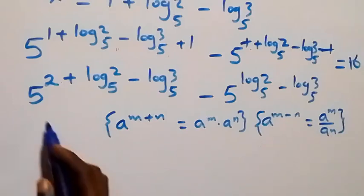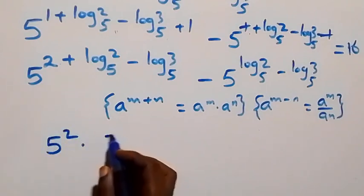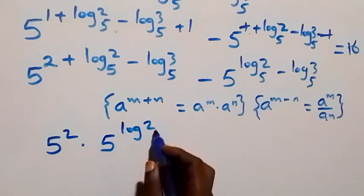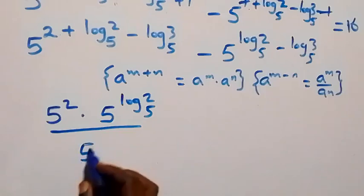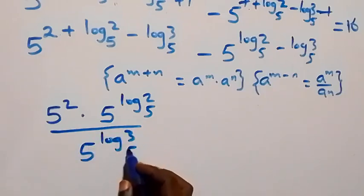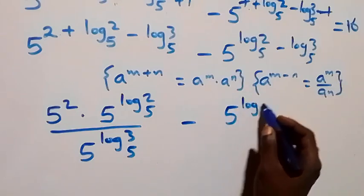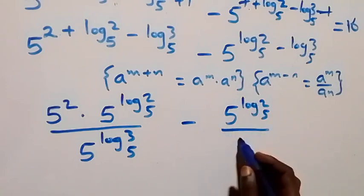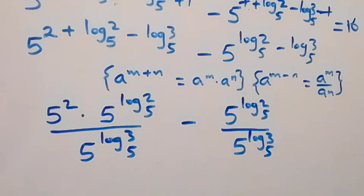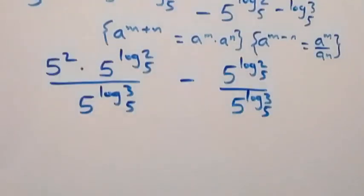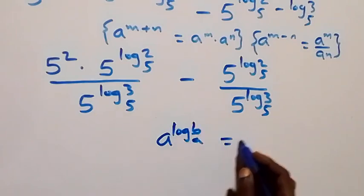Applying the law of indices — a raised to power m minus n equals a raised to power m over a raised to power n — what we have can be written as 5 squared times 5 raised to power log₅2, divided by 5 raised to power log₅3, minus 5 raised to power log₅2 divided by 5 raised to power log₅3. Using the law that a raised to power log_a(b) equals b, each term simplifies.